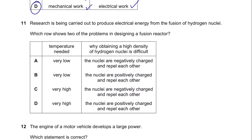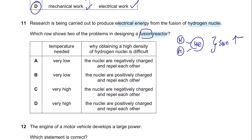Question 11. Research is being carried out to produce electrical energy from the fusion of hydrogen nuclei. Which row shows two problems in designing a fusion reactor? A fusion reactor is when two hydrogen atoms combine to form helium—this can only take place at an extremely high temperature. So the temperature needed is very high, and obtaining a high density of hydrogen nuclei is difficult because the nuclei are positively charged and repel each other. So the answer is D.